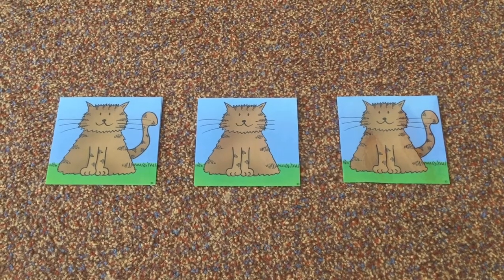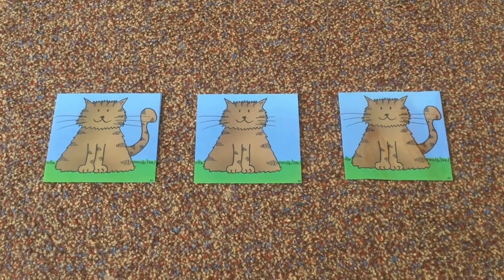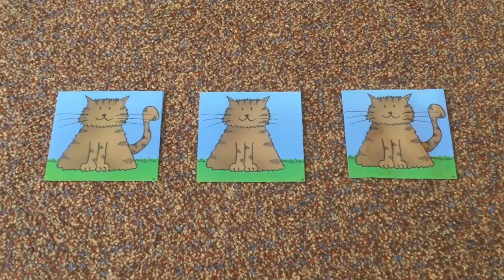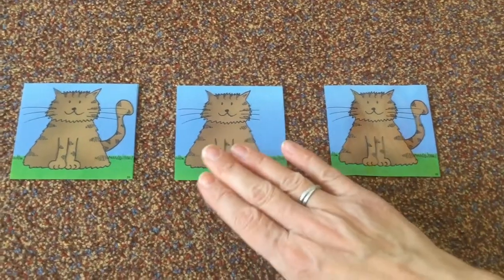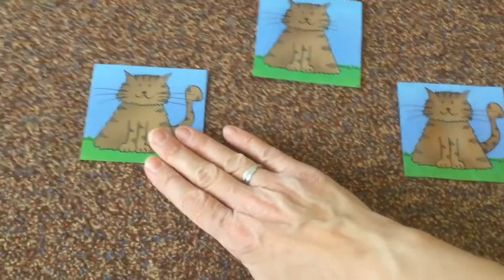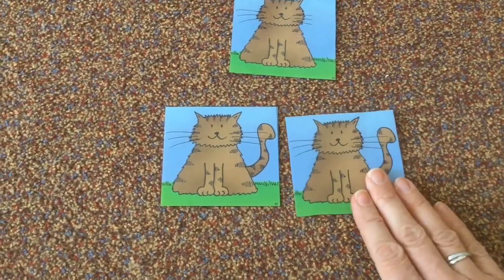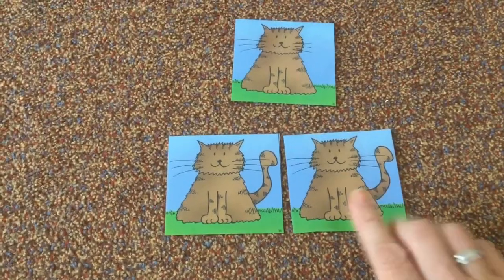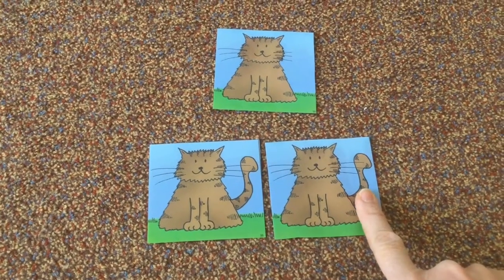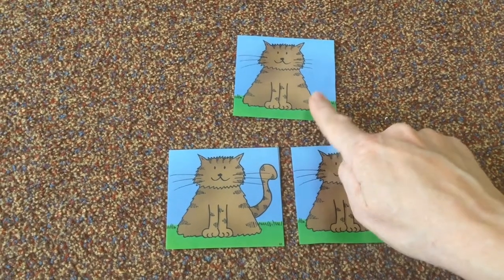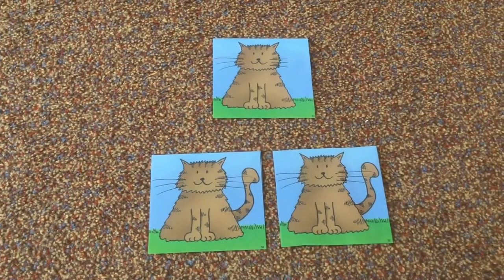One is different. The one that's different is this one. These two are the same — they both have a tail. But this one doesn't. So this one is different.